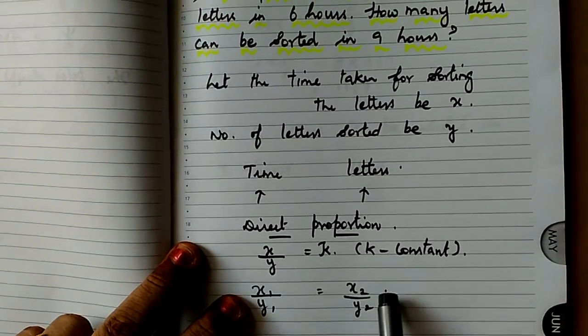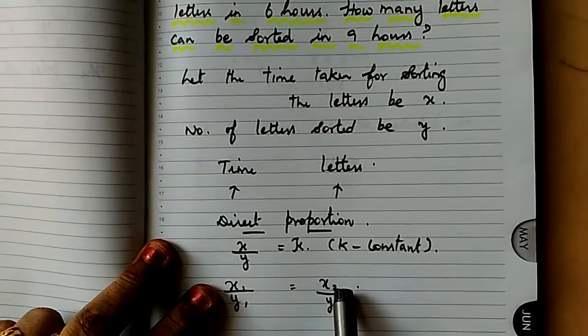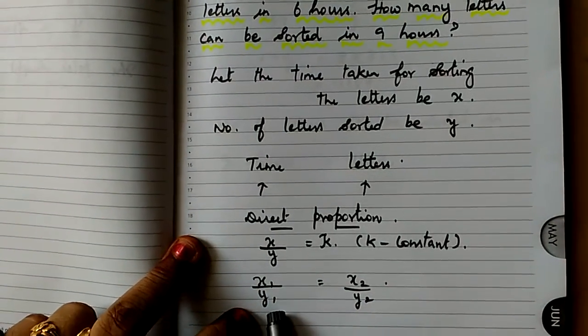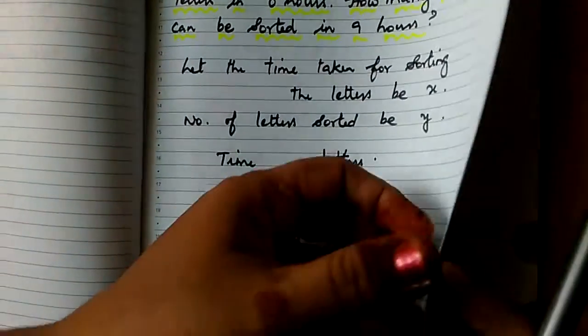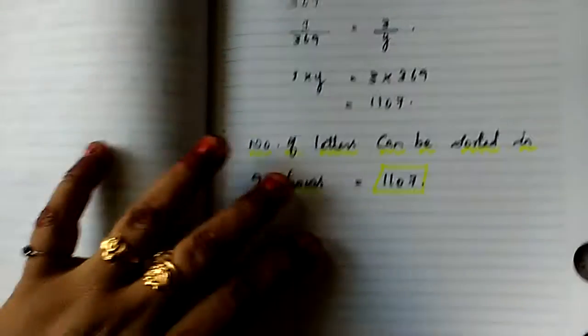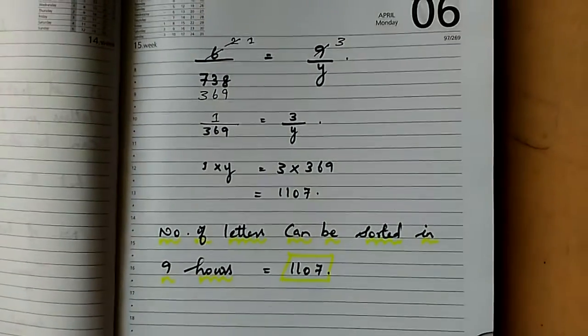We are taking x1, x2 and y1, y2. x1 is the first term, x2 is the second term. y1 is already given as 738 sorted letters, and y2 is what they're asking for. What is the formula again? x1 by y1 equal to x2 by y2. Just put that formula in your mind, which is easy for finding direct proportion.